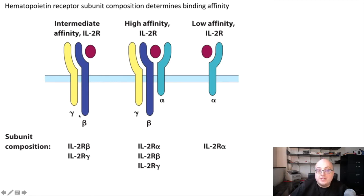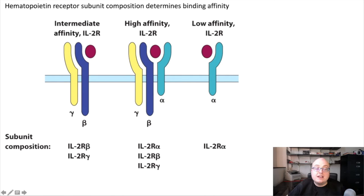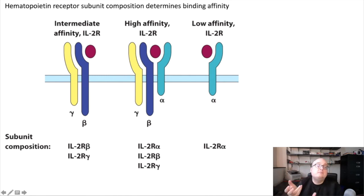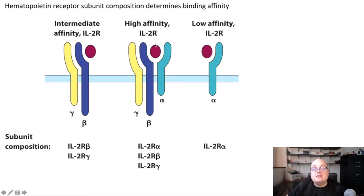But if we change the expression of subunits in the cell to now add an alpha subunit, this trimeric receptor now has high affinity for IL-2. By turning on the expression of an extra subunit, we've increased the binding affinity of the receptor such that it binds more strongly to the same amount of IL-2 compared to the intermediate affinity receptor. So now the cell has much more sensitivity for IL-2 than it did before. In contrast, if we turn off the expression of beta and gamma and turn on only alpha, we're going to have low affinity for IL-2.